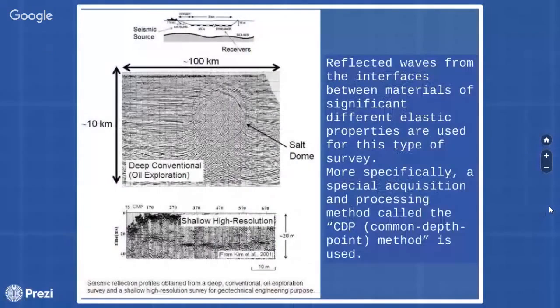Second one is reflection survey method. Reflected waves from the interfaces between materials of significantly different elastic properties, density and seismic velocity are used for this type of survey. More specifically, a special acquisition processing method called the CDP common depth point method is used and the final product from the survey is a section that depicts a cross-sectional image of the subsurface below the surveyed line. This method was invented and has been used traditionally in exploration for natural resources.